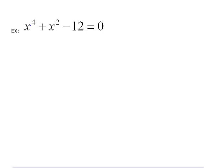This is where we do something called u-substitution. In this case, I'm going to let u equal x^2. Because if you remember, our quadratic form is normally ax^2 + bx + c = 0.